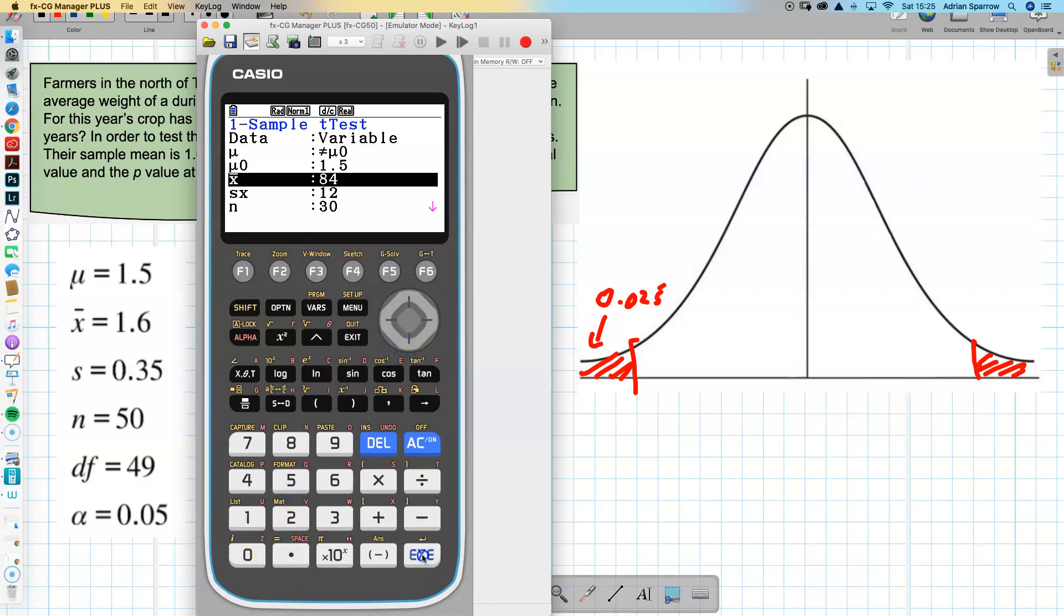So our population was 1.5, our sample was 1.6, our standard deviation was 0.35 and our n was 50. So all that information is nice to write out, get it into your calculator.